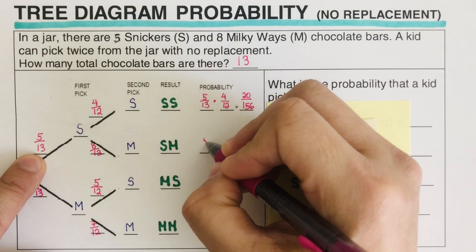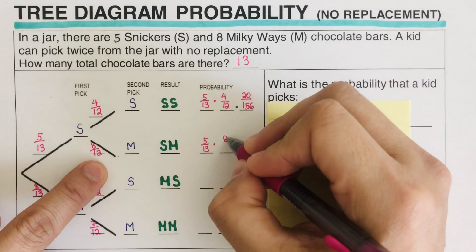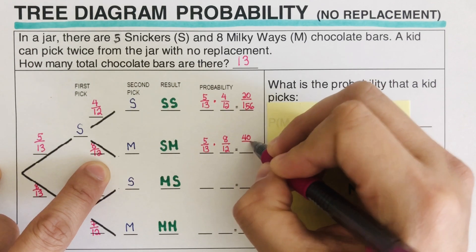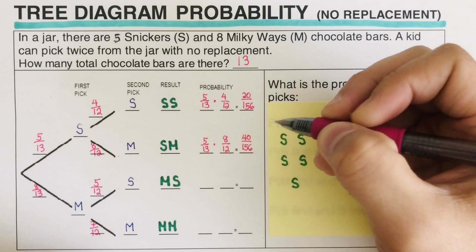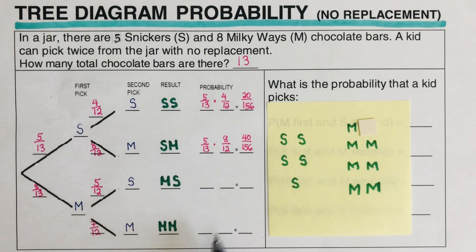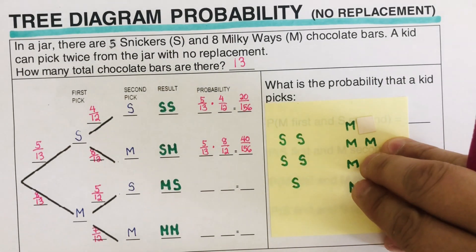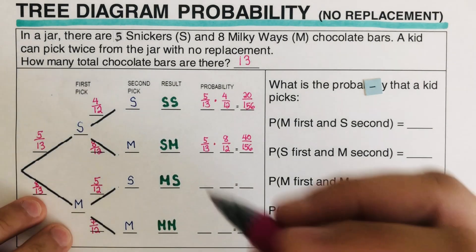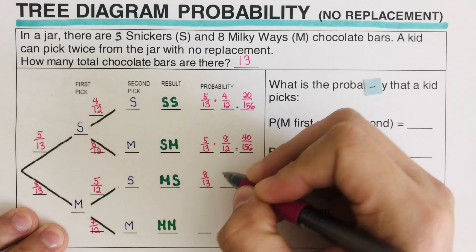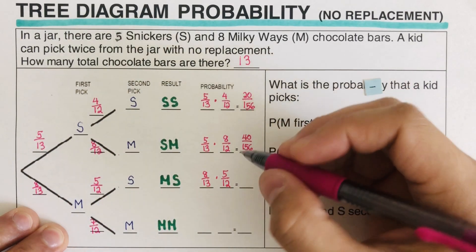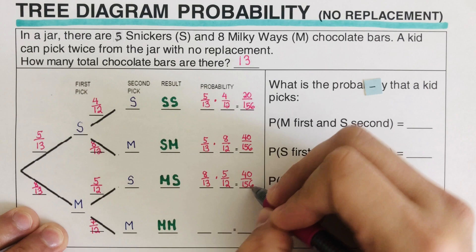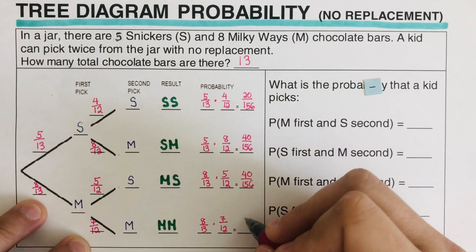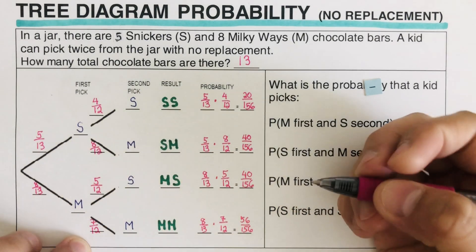I encourage you to pause the video and try the remaining two problems. For Milky Way then Snickers: eight over thirteen times five over twelve equals forty over one fifty-six. For Milky Way then Milky Way: eight over thirteen times seven over twelve equals fifty-six over one fifty-six.